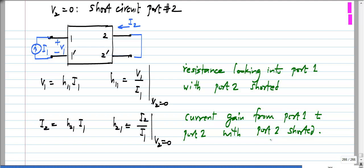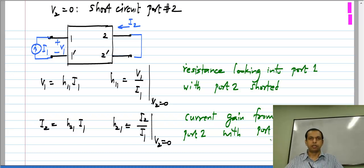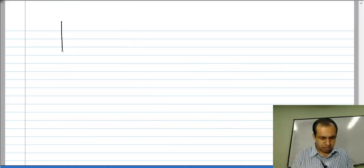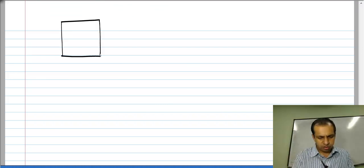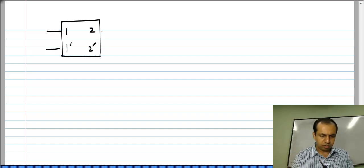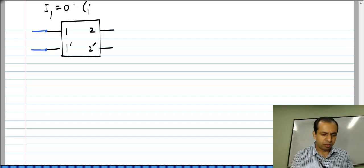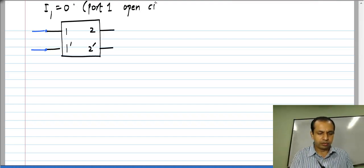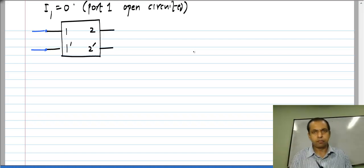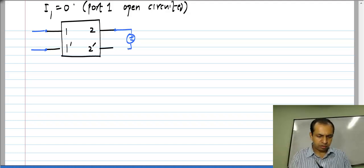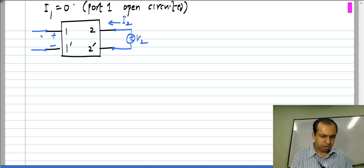The general principle is always the same. You set one of the independent variables to 0 and apply a stimulus on the other side and evaluate two of the parameters. Similarly, we set I1 to 0 which means we are open circuiting port 1. If I set I1 to 0 it means that port 1 is open circuited and then you apply V2 and you measure both I2 and V1.